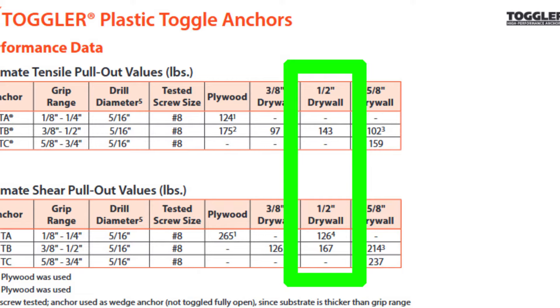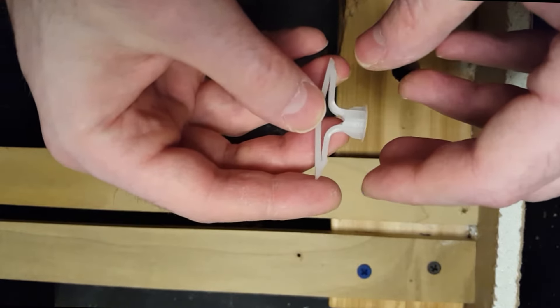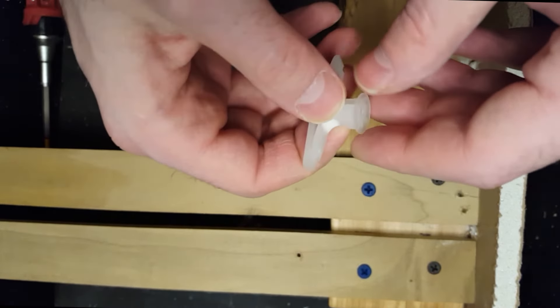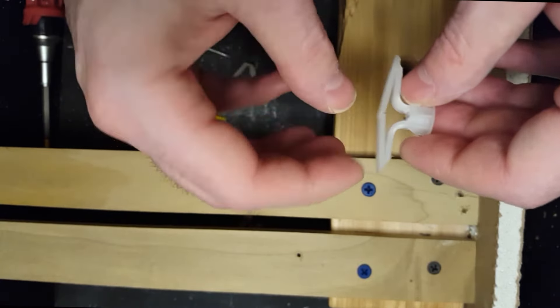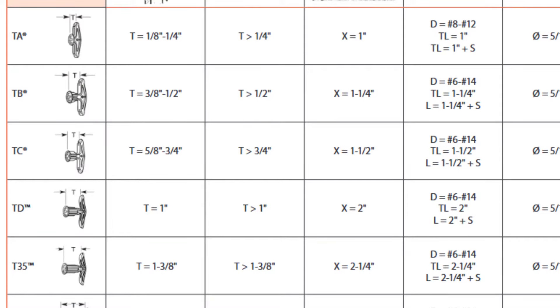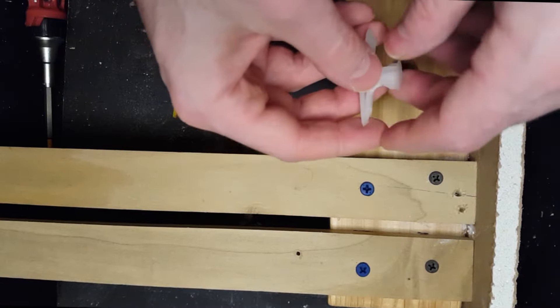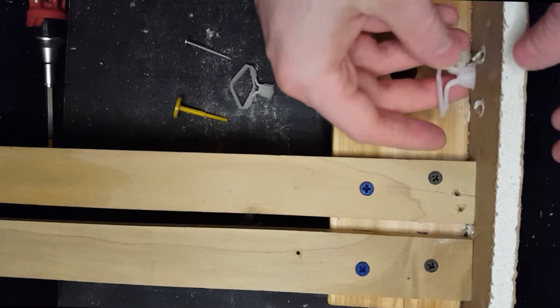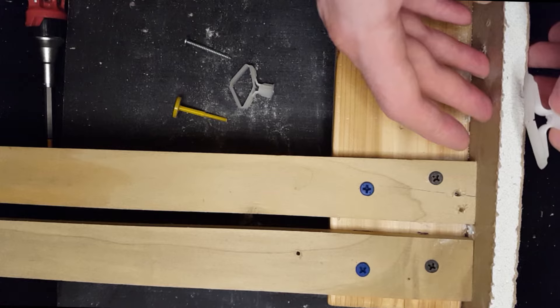These anchors are for hollow wall applications, so you can use them mostly for drywall. They do have a 1⅛ inch version for hollow doors. They also have different sizes depending on how thick your wall is - if it's 5⅛ inch, 1½ inch, for instance, even if it's two layers of 5½ inch drywall.